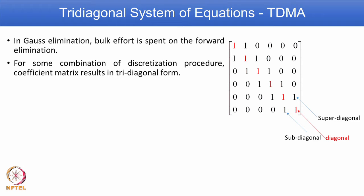The tri-diagonal matrix structure is displayed here again. It has one main diagonal marked here in red colour, and immediately above is a super diagonal and immediately below is a sub diagonal. In this matrix, values are restricted only to a limited region and for most places you have zeros.